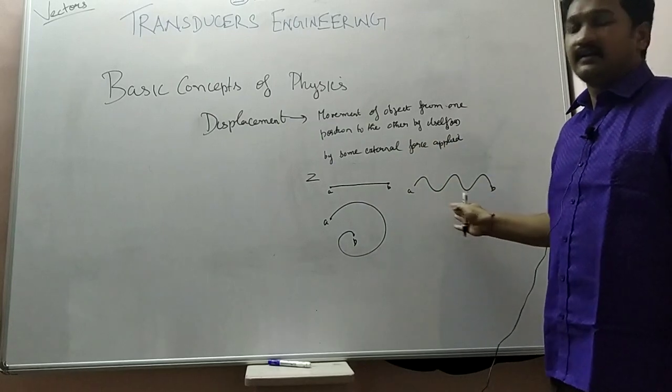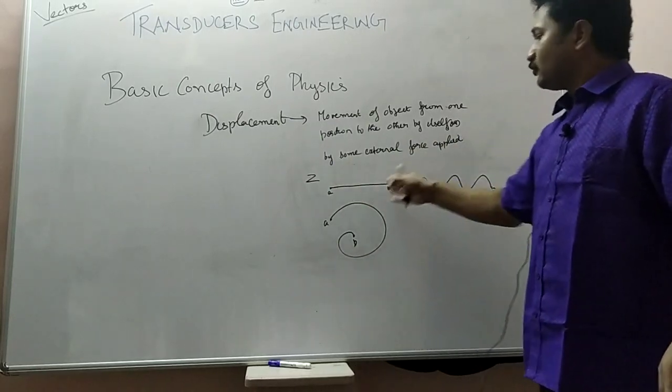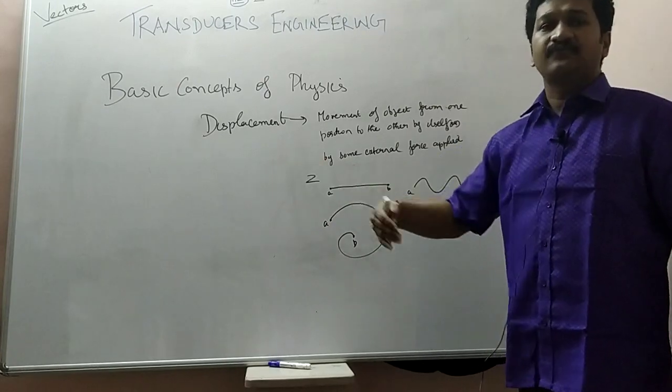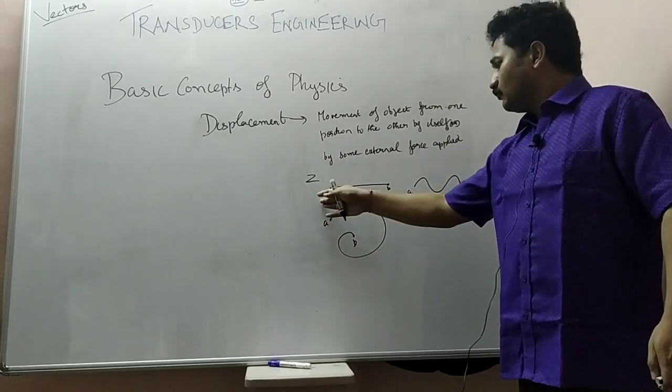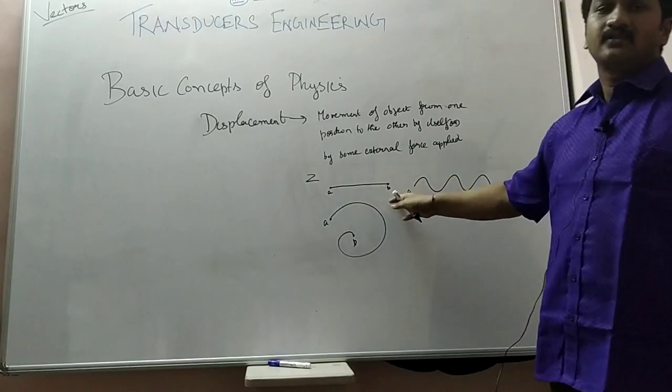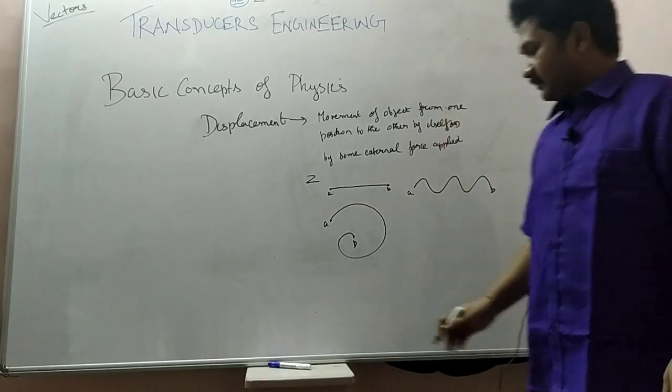So, any type of movement from position A to B, the position may be any from the nearest distance or farthest distance. That shifting of position by the object Z from A to B is called as displacement. Thank you.